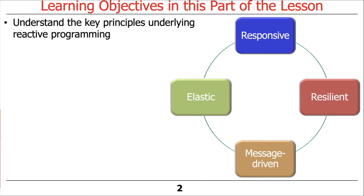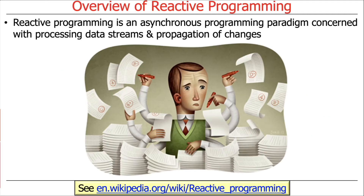There are four primary principles that underlie reactive programming: responsiveness, resilience, elasticity, and message-driven. Reactive programming is essentially a paradigm for asynchronous programming that's concerned with processing streams of data and propagating changes from publishers to one or more subscribers — or zero or more subscribers — but typically from publisher to subscriber or subscribers.